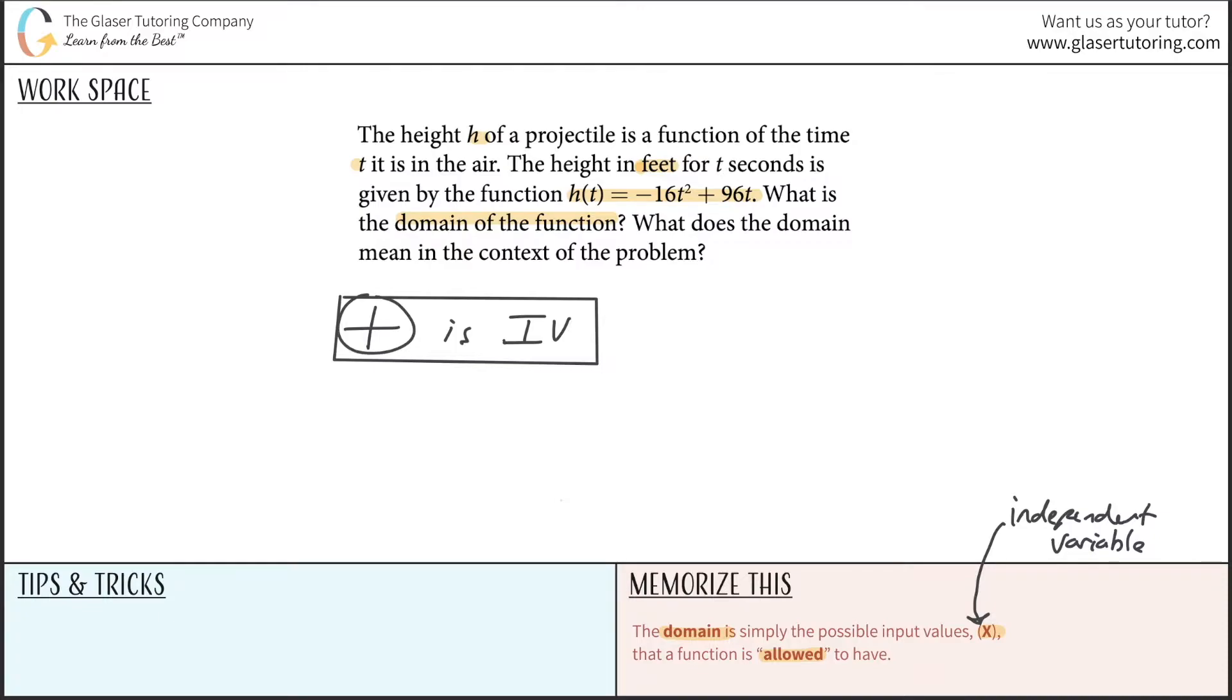Now in this particular context, this is math but it kind of gets a little into physics here. When you look at this function, h(t) equals negative 16t squared plus 96t...